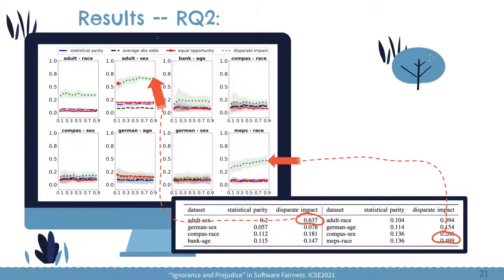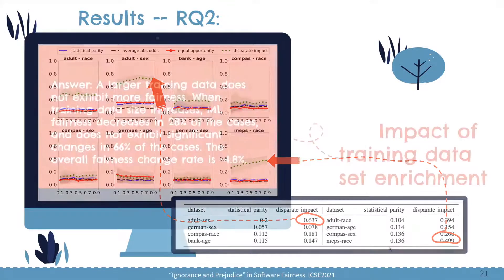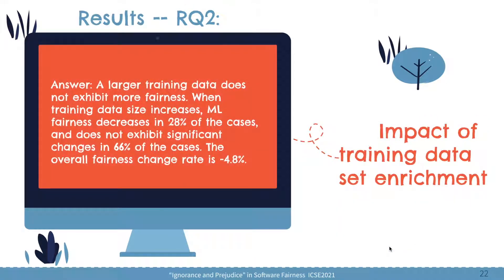For example, for the adult sex data set, the disparate impact fairness value is as high as 0.637. When the training set size increases, the line actually slowly approaches the original bias in the training data. So this means that when there are more training data, if the training data is very biased, then more data just gives the learning model a better opportunity to learn the bias in the data. Based on these observations, our answer to the second research question is that a larger training data does not mean more fairness, and the overall fairness change rate is even below zero.